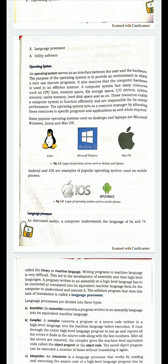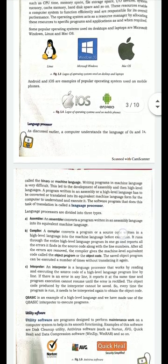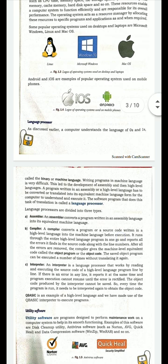There are some operating systems like Linux, Microsoft Windows, and Mac OS for computers, and for mobile devices there are operating systems like iOS and Android. These are examples of operating systems for both computers and mobile devices.